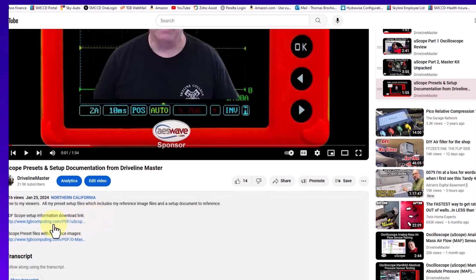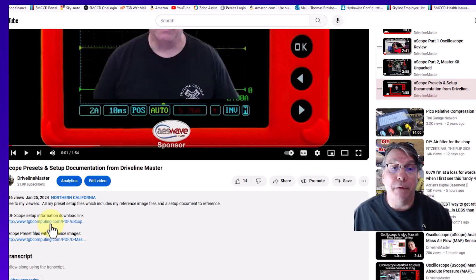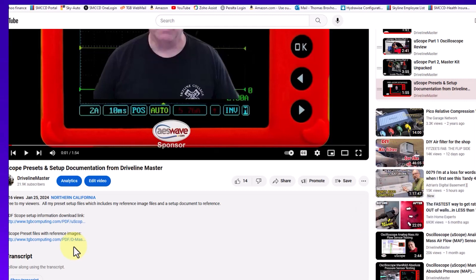In here, there are two links. One of them is this file in a PDF and the other one is a zip file in case you want all my preset files. And you just want to install them into your uScope and you don't want to set them up yourself.